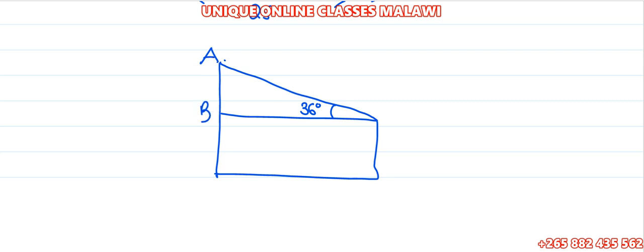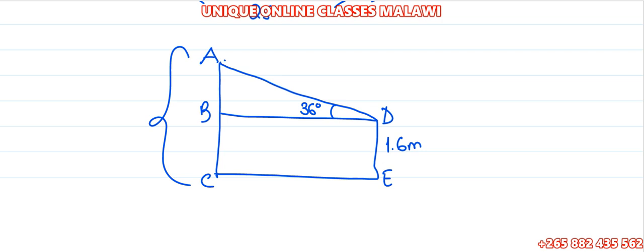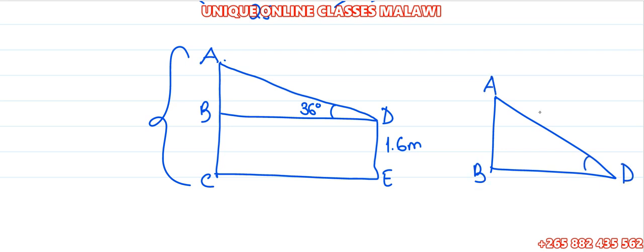So let's label the points A, B, C, D, and E. We're going to have 36 degrees. What's the height of the tree? That's A, C — this is the height of the tree. We have points A, B, and D. The distance B to D is 25 meters.